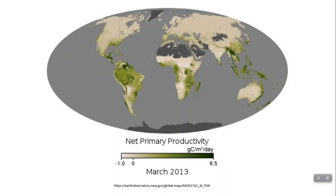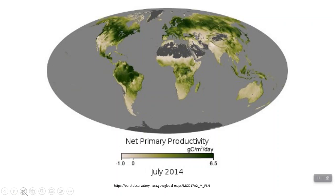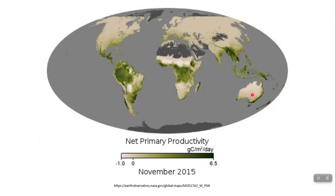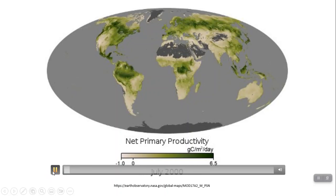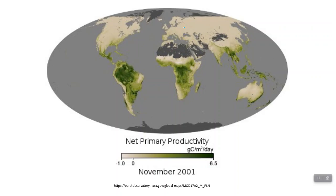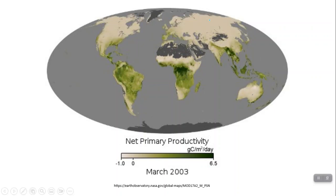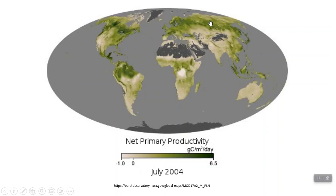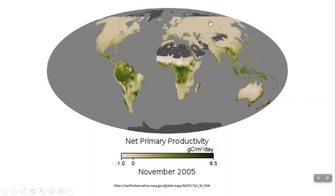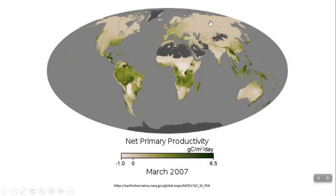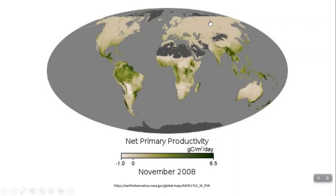Notice some areas of low productivity — for example, the center of Australia is mostly desert, so productivity never gets very high there. In the far northern latitudes, there is productivity in the summer because when spring comes, there's a temporary thawing and a huge increase in productivity. But that disappears in winter because things get snowed on and it's too cold, causing a decrease in productivity.